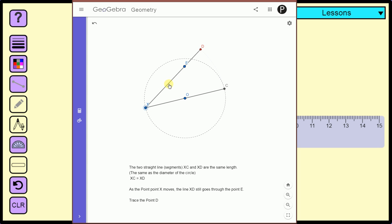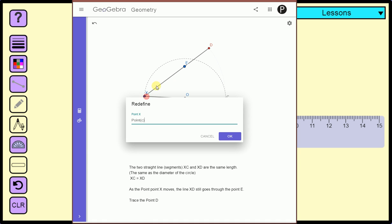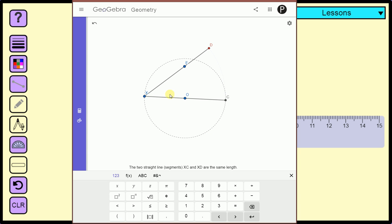So this distance here is the same as that diameter. We're going to investigate what happens to the end of this free line as you move point X about. But we're going to do it as if you were using paper. So let's take the tutorial out of the way.